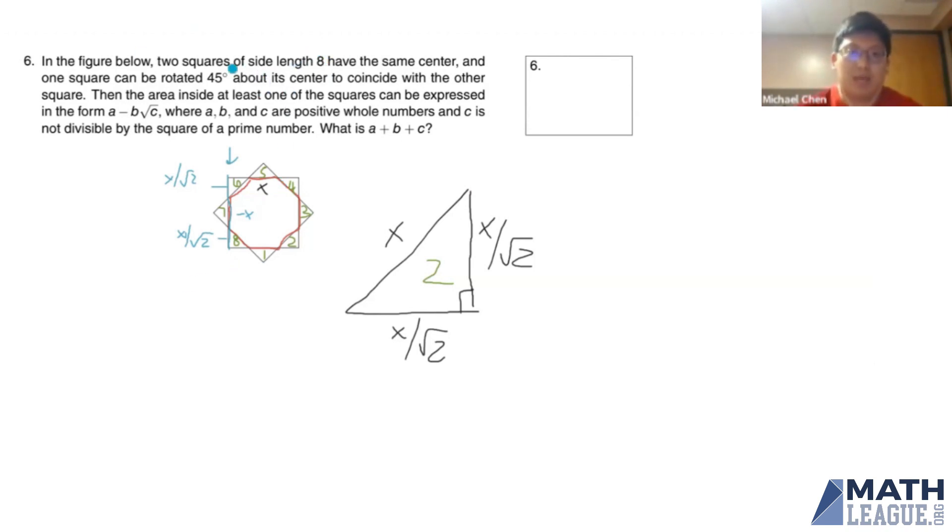So looking at that, we can write the equation that x plus 2 times x over root 2 is equal to 8. So x plus root 2x is equal to 8, x times (1 plus root 2) is equal to 8. So that means that x is equal to 8 over (root 2 plus 1).